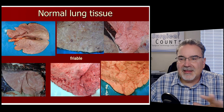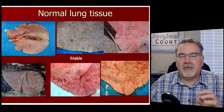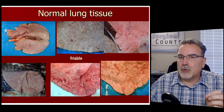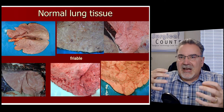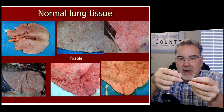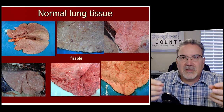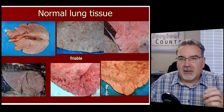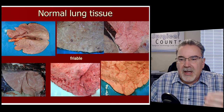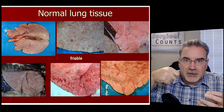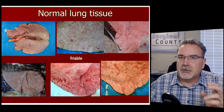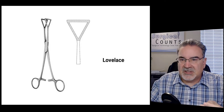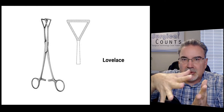Normal lung tissue usually has a light pink color. The lung tissue itself is very soft and very friable — meaning it's not very tough, there's not a lot of fibers to hold it together. If you grab a piece, you can very easily pull it apart. When dealing with lung tissue, we have to be very gentle because it's friable. Suturing the lung tissue is difficult because a suture will just pull right through it. So we usually use something with a nice wide blade on it, like the Lovelace forcep, which spreads out any pressure on that tissue.